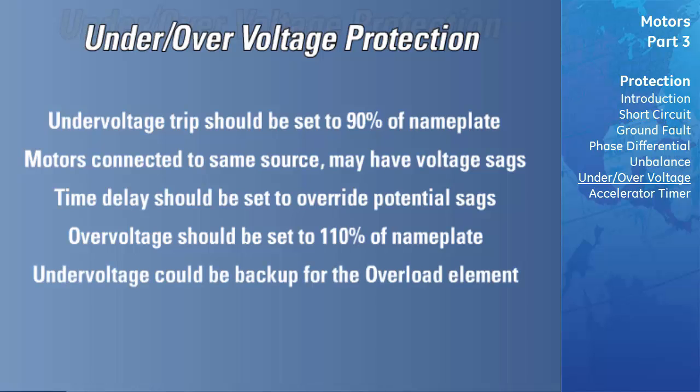The undervoltage element can be considered as backup protection for the overload element. If the voltage decreases, the current will increase, causing an overload trip. In some cases, if an undervoltage condition exists, it may be desirable to trip the motor faster than the overload element.